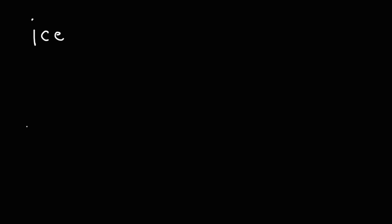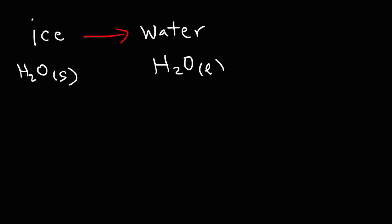Here's a question: when ice melts into liquid water, is this an endothermic or an exothermic process? Ice is H₂O in the solid state and water is H₂O in the liquid state. In order to melt ice, you need to add heat to it. If you put ice on a stove and turn it up, it's going to melt. So melting ice is an endothermic process — the enthalpy change is positive.